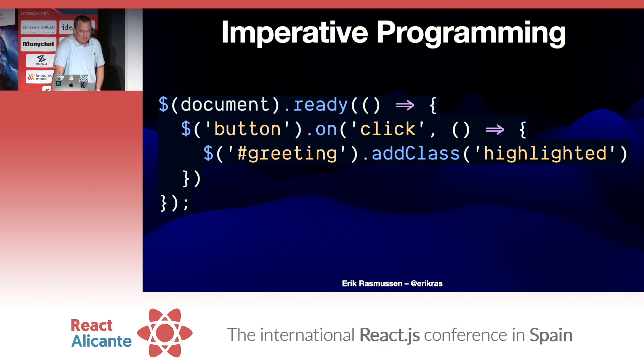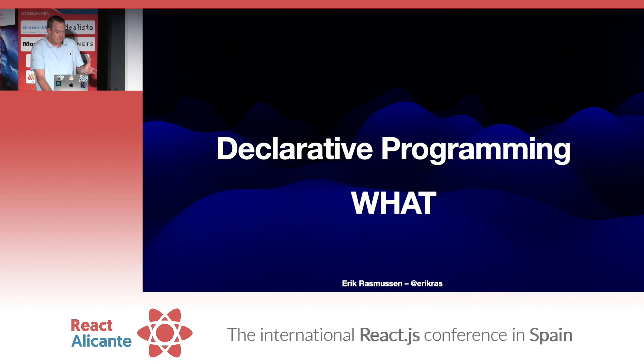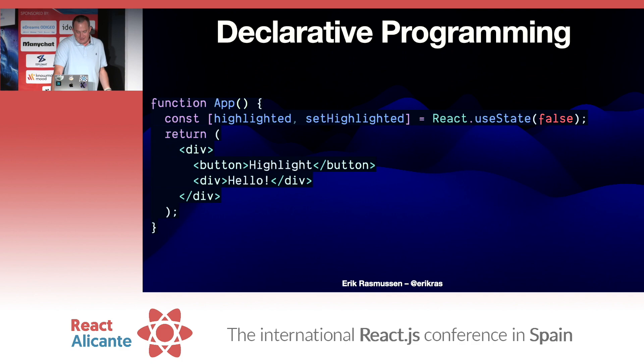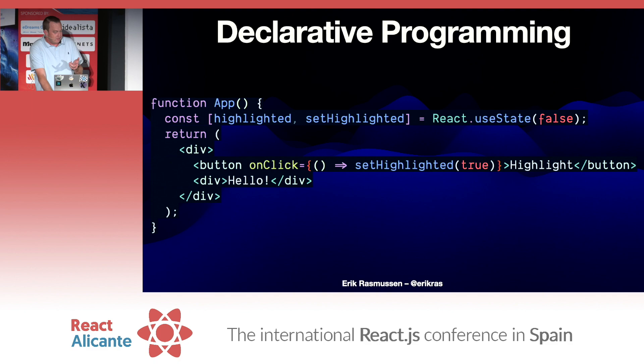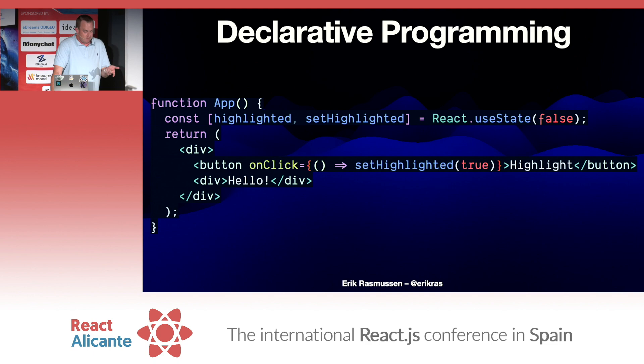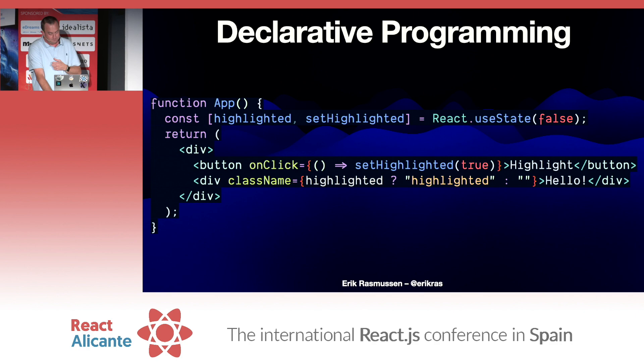Then came along declarative programming, where you tell the computer what to show based on the internal state of the application — and this is what React gave us. With React, you start off with some state, you find the button and say when the user clicks this button, change the state. Then you find the greeting element and say: depending on the state, either show the highlighted class or not. And if you wanted to toggle on the next click, that was easy — you just worry about the state and you don't have to think about the class anymore.